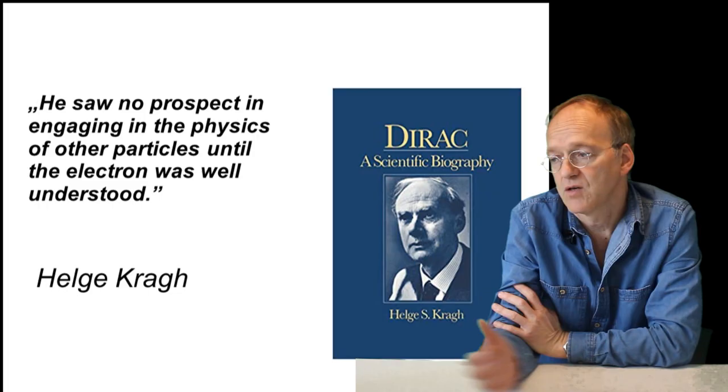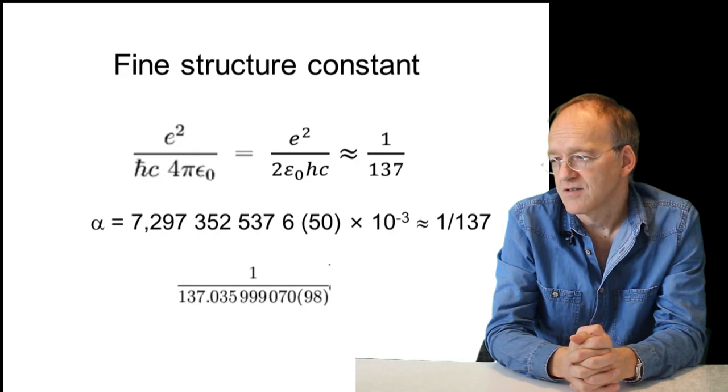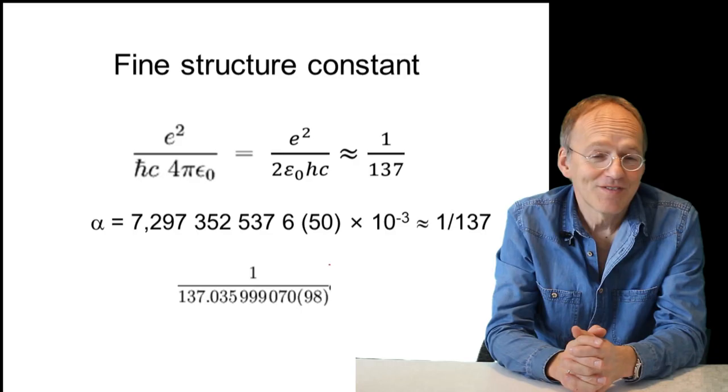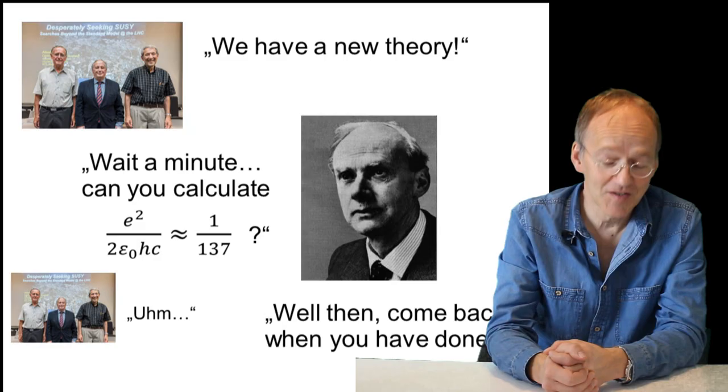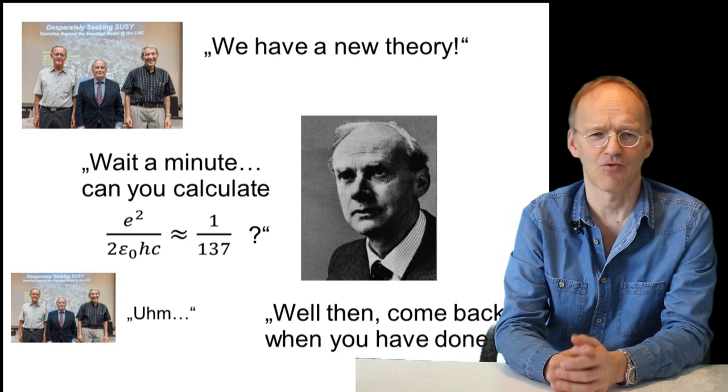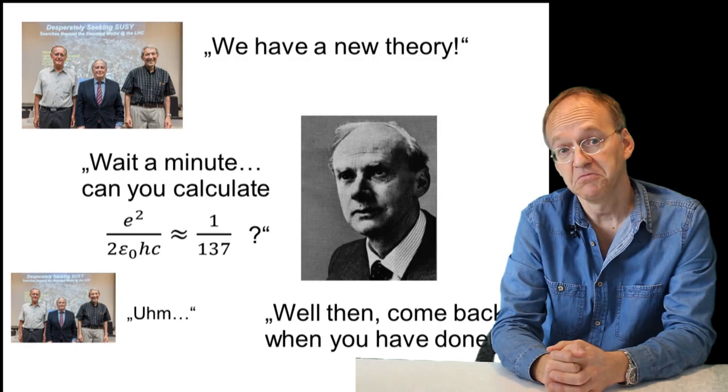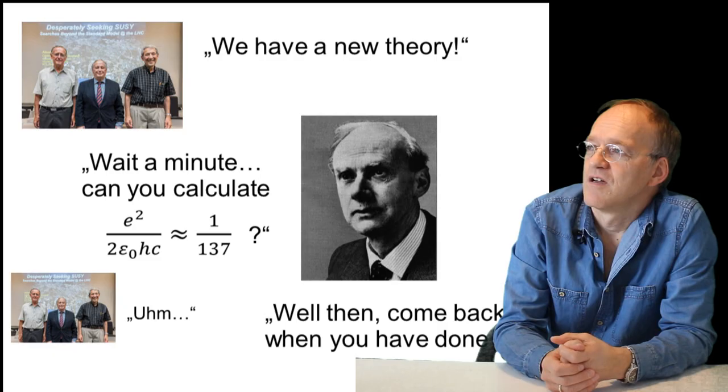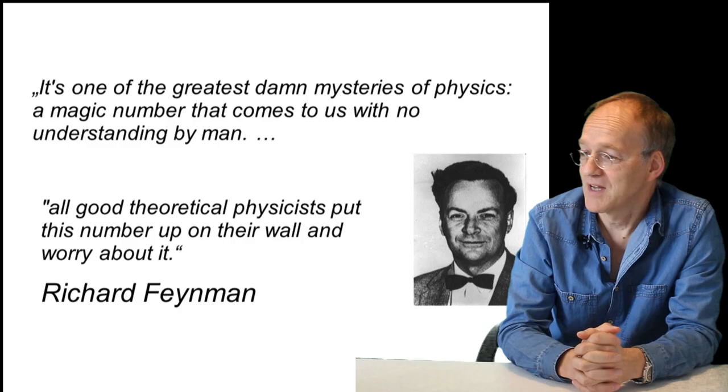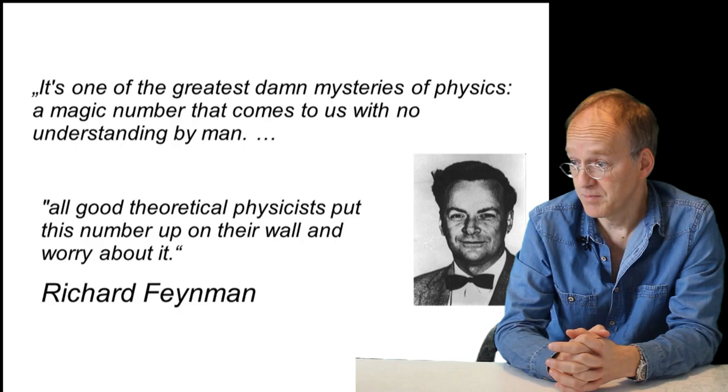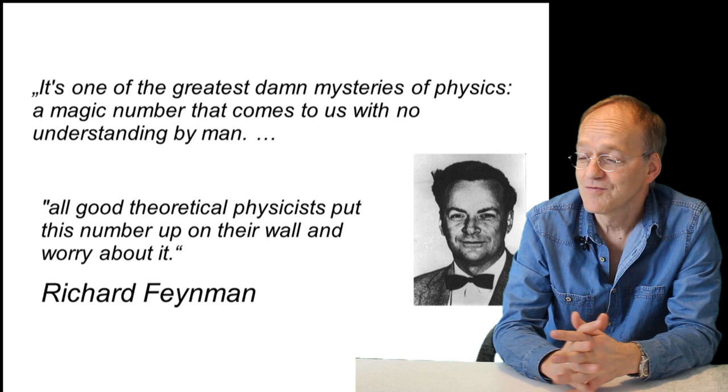As you know, also the fine structure constant 137 is such a mysterious number in physics. Dirac was sometimes very impatient when people were not interested in the same way as he was. There is an anecdote about two young physicists approaching him. 'Oh professor Dirac, we have a new theory.' He rudely interrupted: 'Sorry, but can you calculate the fine structure constant?' 'No.' 'So come back when you have done it.' This is one of the profound mysteries of modern physics. I might also quote Richard Feynman here: 'It's one of the greatest damn mysteries of physics, a magic number that comes to us with no understanding by man. All good theoretical physicists put up this number on their wall and worry about it.' This is sometimes what you would like modern physicists to do.